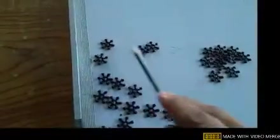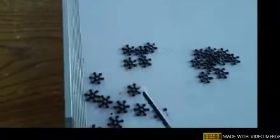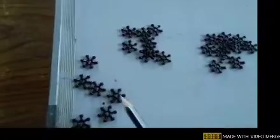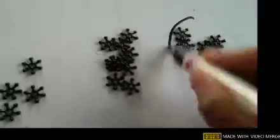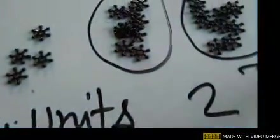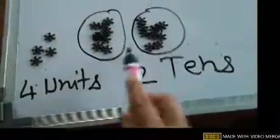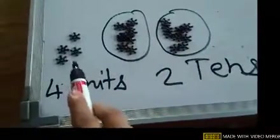Let's see another group: 1, 2, 3, 4, 5, 6, 7, 8, 9, and 10 — that is the second group of 10. Then the remaining: 1, 2, 3, and 4. So in total I have formed 2 groups of 10, and these are 4 single units — 4 single flowers. That gives us 2 tens.